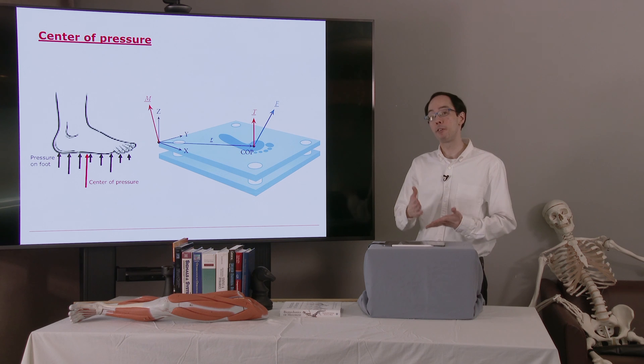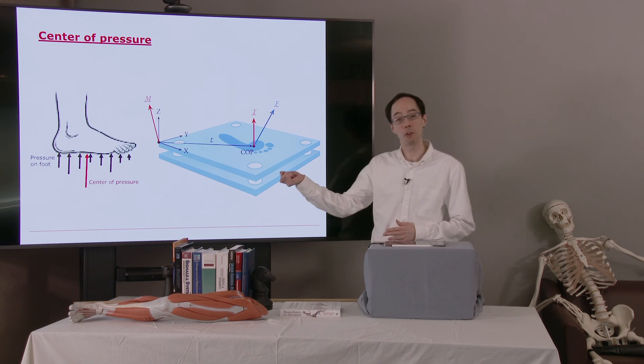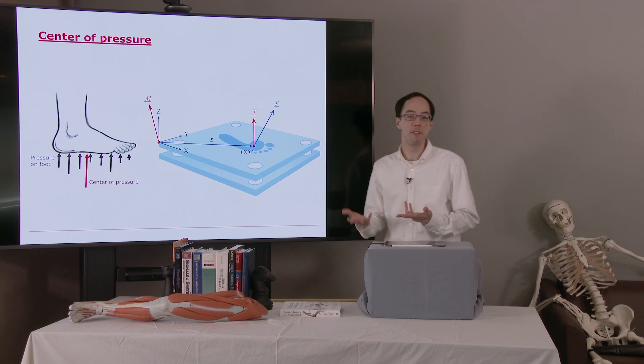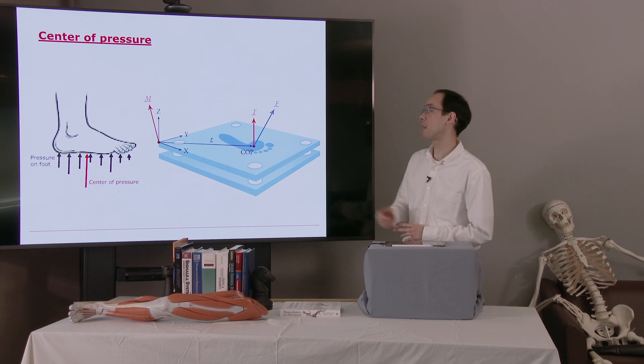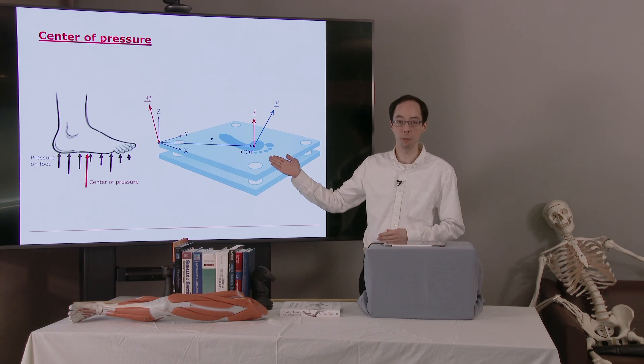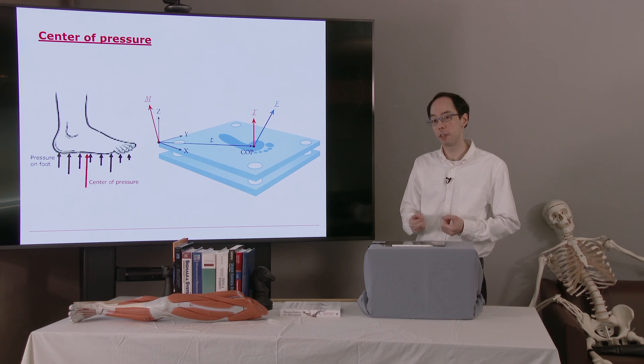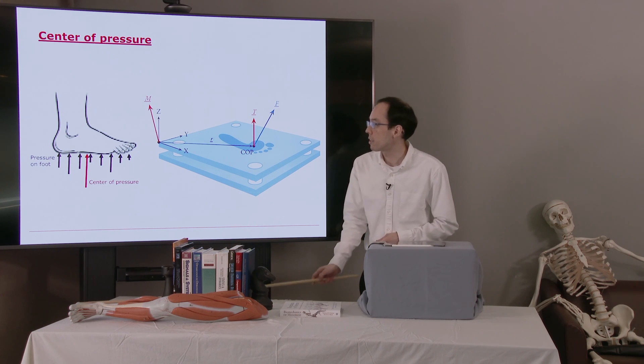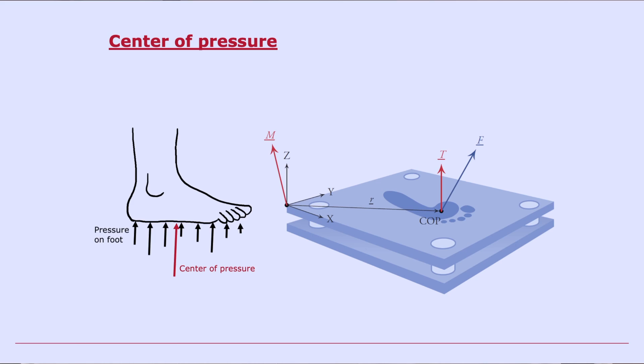Now expressing the force and the moment at the origin of the force plate is not the most convenient point. In fact, we would much rather know the force and moment at the center of pressure. The center of pressure is a very important point on the foot. Let's take a look at this sagittal plane image here on the left. So here are a bunch of force arrows in black that represent the pressure that's on the foot. And we can represent those forces as an equivalent single force and moment.